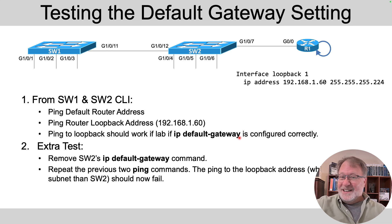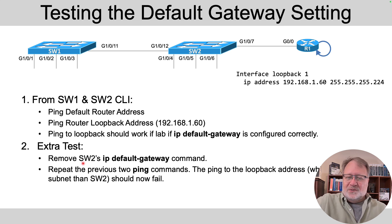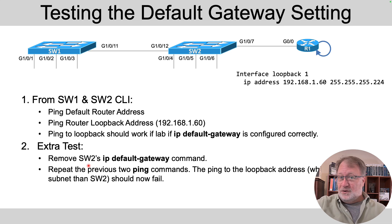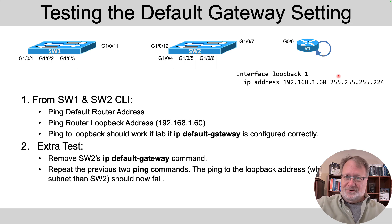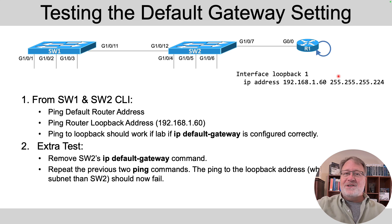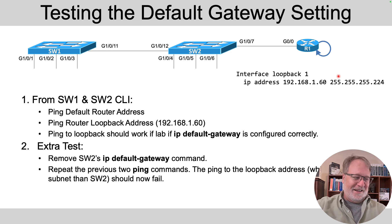You could continue that test by going to one or both switches — like SW2 — and removing your IP default gateway command from the configuration, breaking it, and then repeating a ping to the loopback address. It should fail now because you broke the default gateway configuration you had added. So it's a way to validate that setting. If that sounds confusing, it's demoed in the review video so you can check that out.